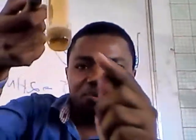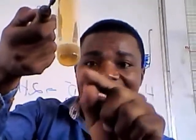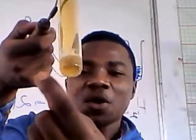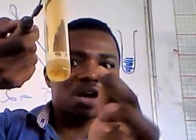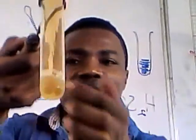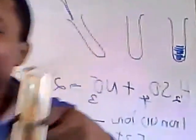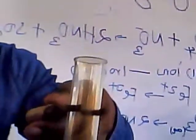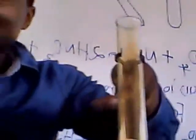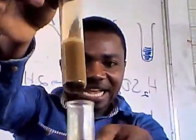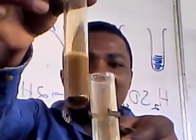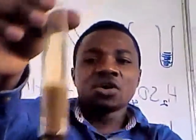Now, when you look at this test tube, down there we have a clear solution, and up there we have a ring — a brown ring. If we compare the two, it is clear at the bottom and there is a brown ring on top.